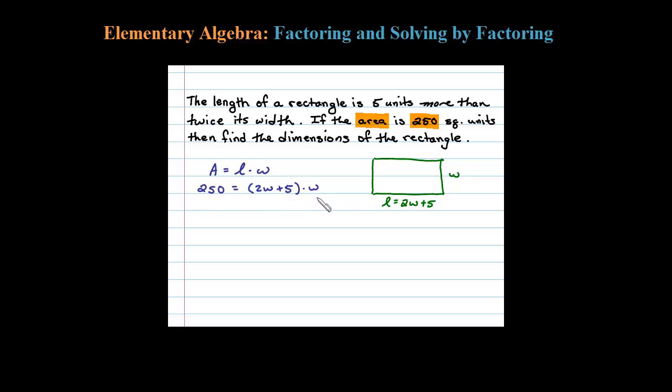We can solve this using algebra. The first step is to multiply that W times the binomial, and to do that we use the distributive property. That gives us 2W² plus 5W. We see that the equation is quadratic.